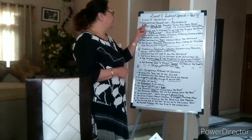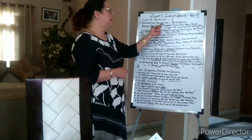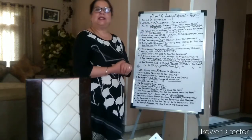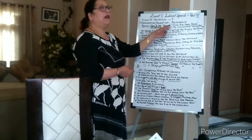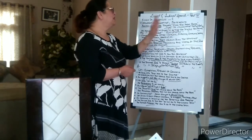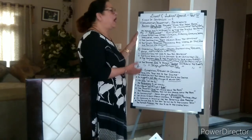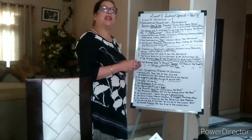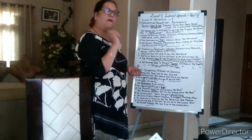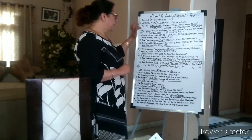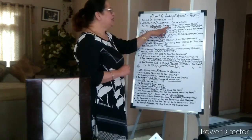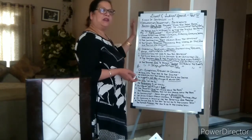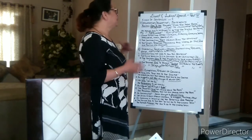The first one is declarative, also called assertive — they can be called by both names. These are statements. For example, 'I am going home' is a statement. Rajan said, 'I am going home' becomes Rajan said that he was going home. They are basically statements and they end with a full stop. Rajan said to the teacher, 'I can take these books' — he's made a statement, so it's a declarative or assertive sentence.